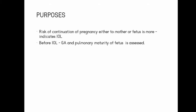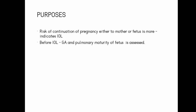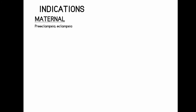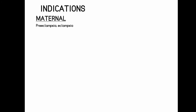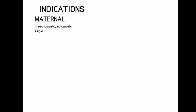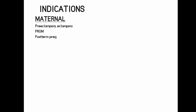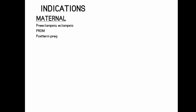First, the gestational age features include pulmonary maturity. The first part of the pregnancy involves hypertension — pre-eclampsia, eclampsia. PROM is premature rupture of membranes. Post-term pregnancy and return for pregnancy are also indications.